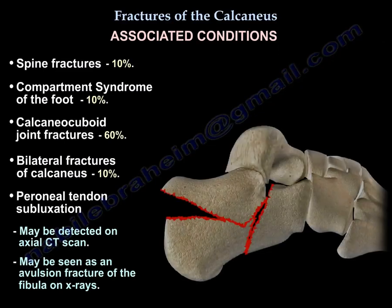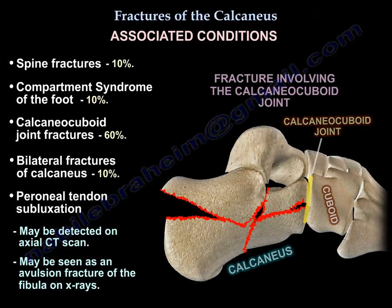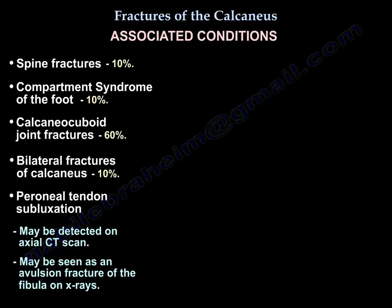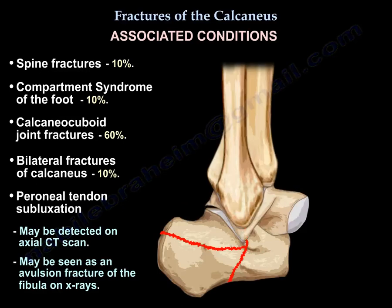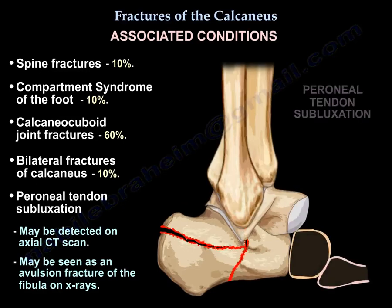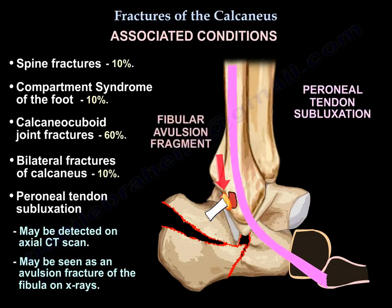Calcaneal-cuboid joint involvement occurs in about 60% of cases. Bilateral fracture of the calcaneus occurs in about 10%. Peroneal tendon subluxation can also occur with calcaneal fractures — it may be detected on axial CT scan and may appear as an avulsion fracture of the fibula on plain X-rays.